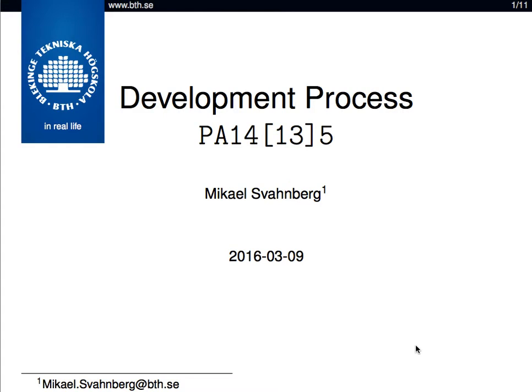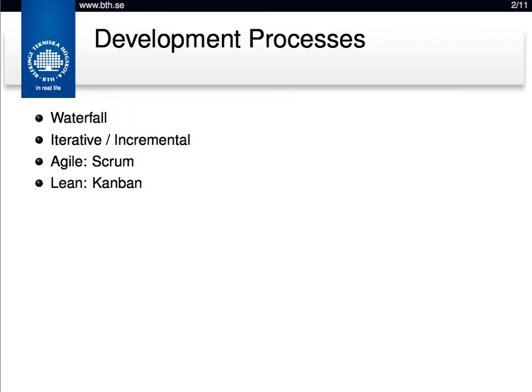Let's talk about development processes for a while. Development processes can roughly be divided in a sort of timeline, starting with the old waterfall model, going through iterative incremental models — rational unified process being one of those. Scrum from the agile movement is one more iterative incremental development process, and the extreme case of extreme iterations and extreme incremental development is the lean movement, and Kanban is one of those. So let's go through each of these in slightly more detail.